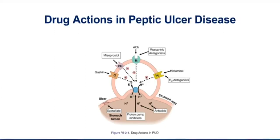Also recognize the three physiologic stimulators for acid production: gastrin, acetylcholine, and histamine. All three of those receptors immediately become targets for drugs that can be useful in peptic ulcers. You also see one receptor — the prostaglandin receptor — that inhibits the proton pump, so stimulating that receptor would inhibit the production of acid.